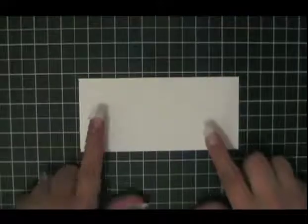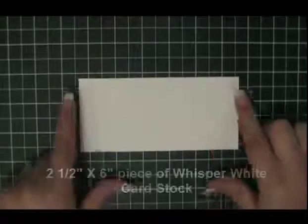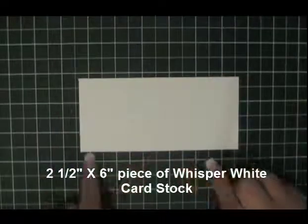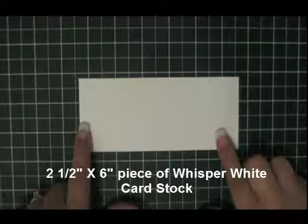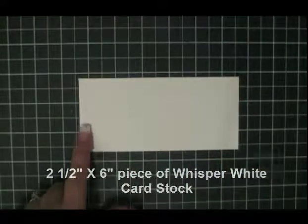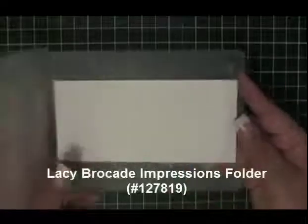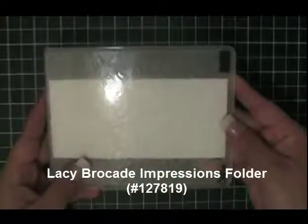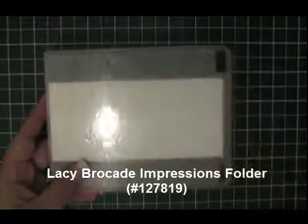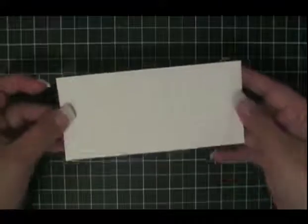To begin creating your envelope flap, you will take a two and a half by six inch piece of whisper white cardstock. You will place it inside the impressions folder of your choice. In this case, I am using the Lazy Brocade impressions folder and I will run this through my Big Shot. Once I have done that, I will end up with a beautiful piece such as this one.